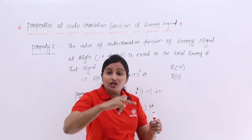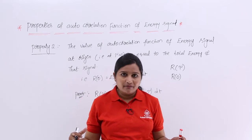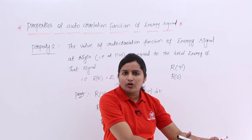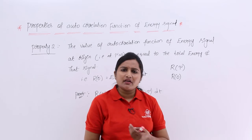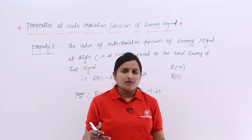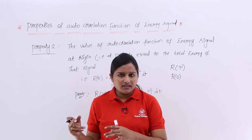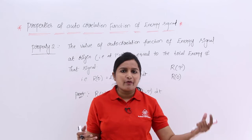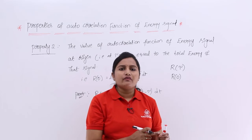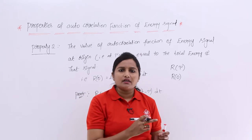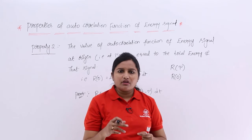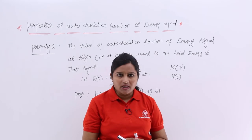For example, if anyone gives you a graph of the autocorrelation function and asks what is the energy of the signal having this autocorrelation function, how do we find it? They just give the autocorrelation function graph. Then you simply need to see the value — the amplitude — at τ equal to 0, and give that value as the energy of the signal.